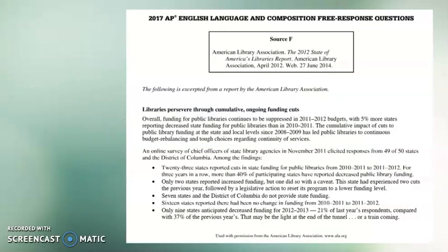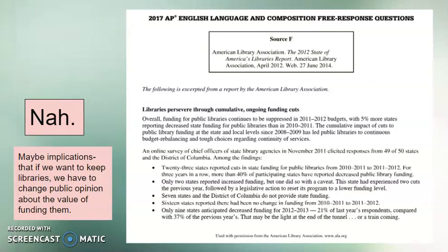This last source is all about funding — how public libraries have continued to have declines in funding. I read through it and skimmed it and I don't really see anything that relates to my ideas, so this source is probably not going to be an integral part of my argument. I could use it perhaps in the conclusion paragraph talking about implications — if my argument is that libraries serve a vital role, maybe I bring this in as evidence that we need to change the public's opinion so we can provide libraries with the funding they need. But still, it's not an integral part of my argument.